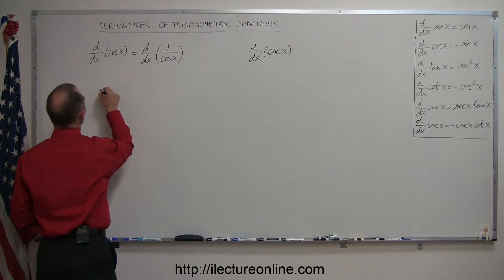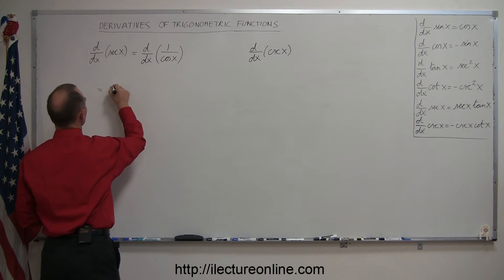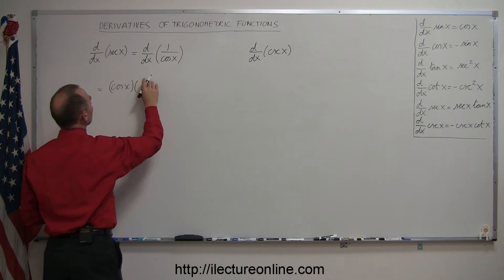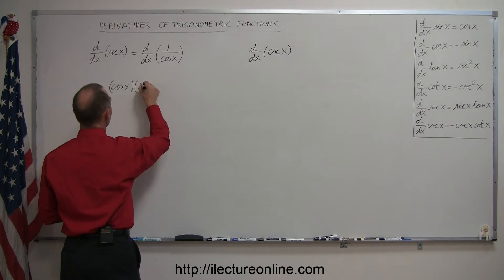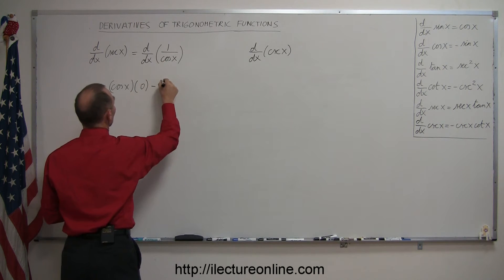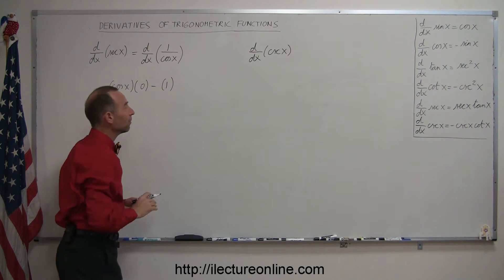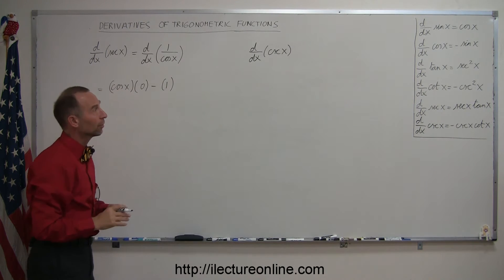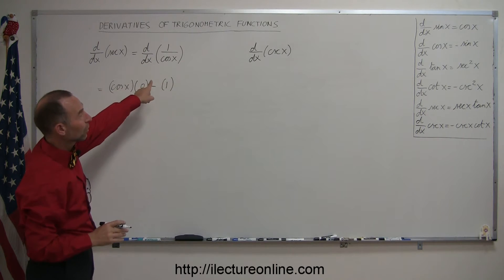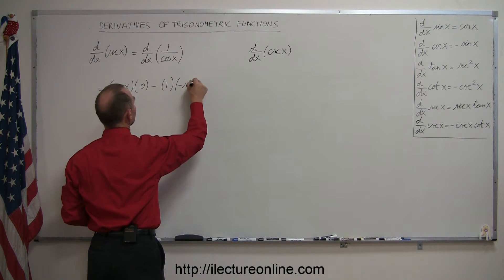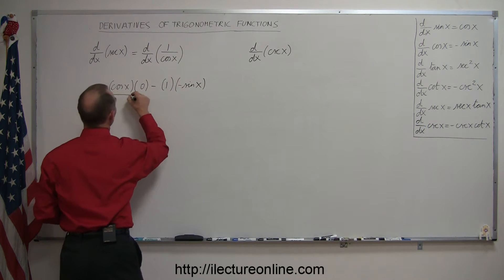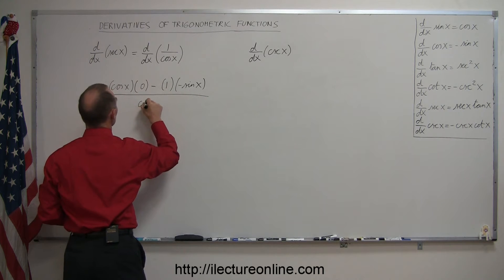Using the quotient rule, this equals the denominator, cosine of x, times the derivative of the numerator — the derivative of 1 is 0 — minus the numerator 1 times the derivative of the denominator. The derivative of cosine of x is negative sine of x, and the whole thing is divided by the denominator squared, which is cosine squared of x.